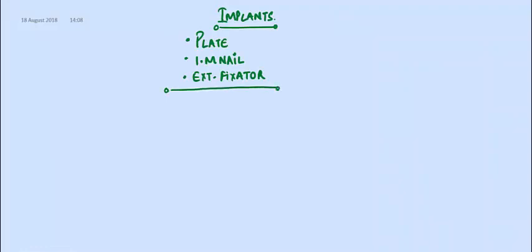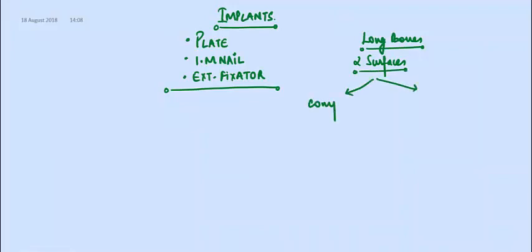Before I tell you about the plate or the intramedullary nail, let me tell you about the bone. Long bones basically have two surfaces: one is the compressive side of the bone and the other is the tension side of the bone. The tension side is usually the convex side.